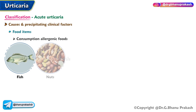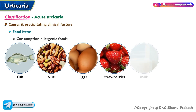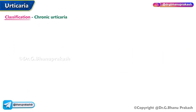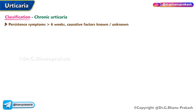Food items such as fish, nuts, eggs, strawberries, milk, cheese, preservatives, and coloring agents can contribute to acute urticaria. Idiopathic origin is also recognized. Chronic urticaria is characterized by the persistence of symptoms for more than six weeks, with causative factors either known or unknown.